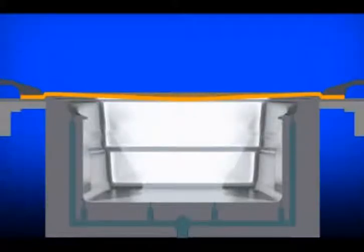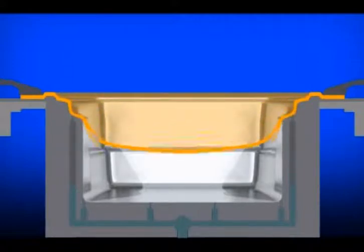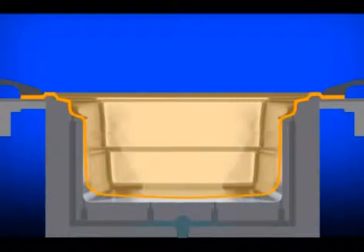The plastic sheet is heated in a clamp frame until it's rubbery. A vacuum removes the air from under the sheet and atmospheric air pressure stretches the sheet into the mold. Some regions stretch more than others and this causes uneven sheet thickness.